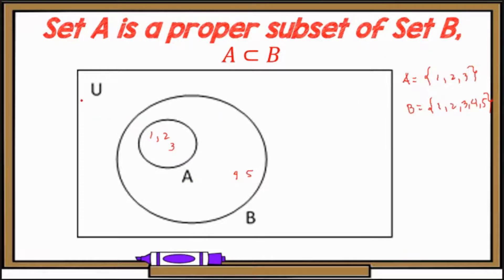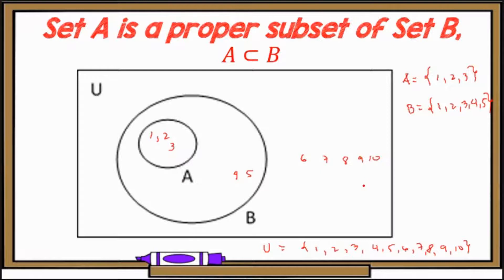All these numbers are in the universal set. For example, if the universal set is the set of counting numbers from 1 to 10, then 6, 7, 8, 9, 10 would appear outside both circles but still inside the rectangle. Universal sets can vary depending on the context of your problem. That's how we represent subsets using the Venn-Euler diagram.